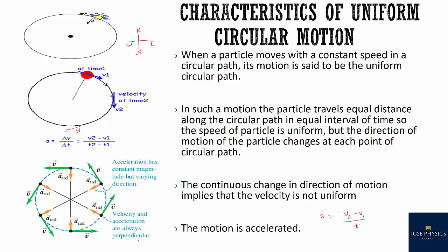One more thing to remember: in uniform circular motion, velocity and acceleration are always perpendicular to each other. The acceleration is directed towards the center, and the velocity is tangential to the circular path.